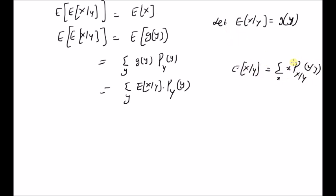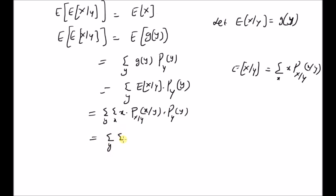Now, by using this definition, we have a double summation over y and over x of x times the conditional probability mass function p_{X|Y}(x|y) times the marginal function p_Y(y). But as we learned in the previous video, this product is nothing but the joint probability mass function of X and Y. So this becomes the summation over y and x of x times the joint mass function p(x, y).